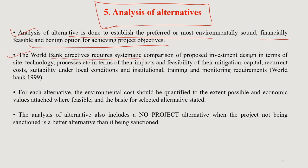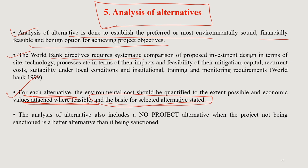World Bank directives sometimes require systematic comparison of proposed investment designs in terms of site, technology, and processes — in terms of their impacts, feasibility of mitigation, capital and recurrent costs, suitability under local conditions, and institutional training and monitoring requirements. For each alternative, the environmental cost should be quantified to the extent possible with economic values attached where feasible, and the basis for the selected alternative must be stated. The analysis also includes the no-project alternative — if a project would have a negative impact, it is better to reject it.